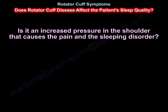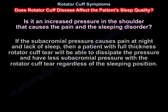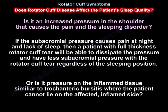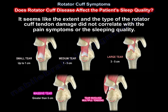The question is: is it increased pressure in the shoulder that causes the pain and sleeping disorder? If subacromial pressure causes pain at night, then a patient with a full thickness rotator cuff tear would be able to dissipate that pressure, regardless of sleeping position. Or is it pressure on inflamed tissue — similar to trochanteric bursitis — where the patient cannot lie on the affected, inflamed side? It seems the extent and type of rotator cuff tendon damage did not correlate with pain symptoms or sleeping quality.